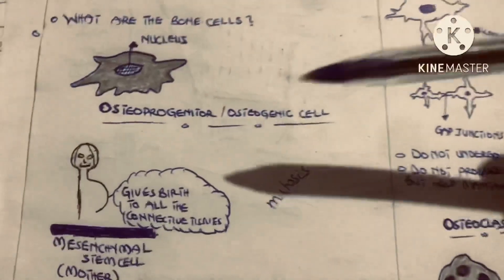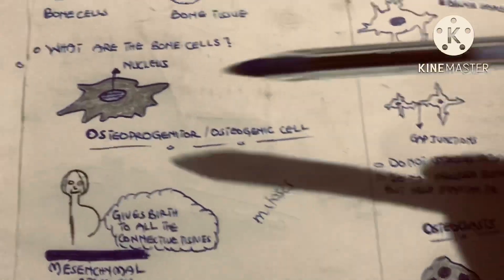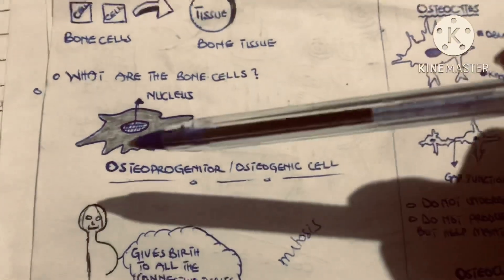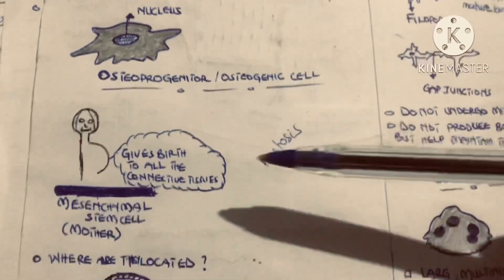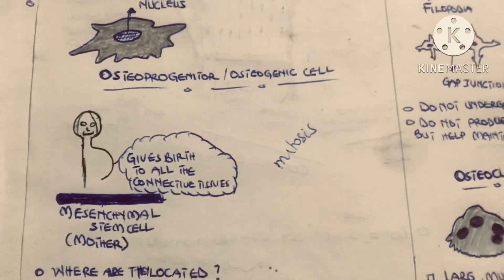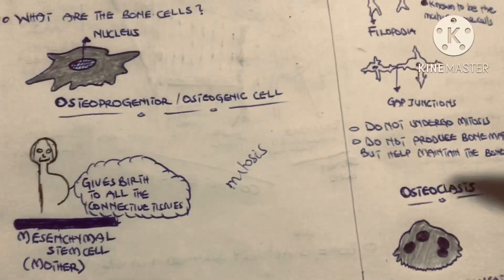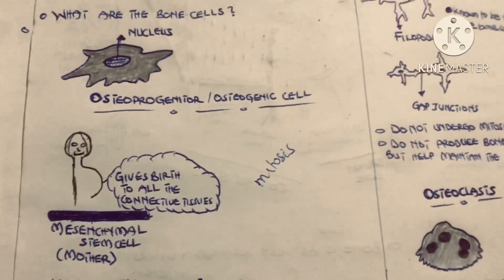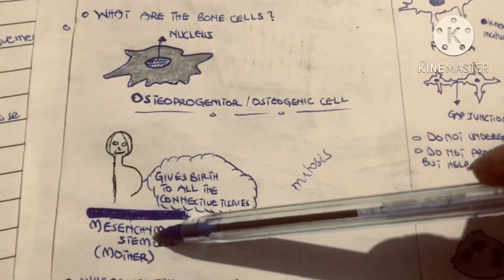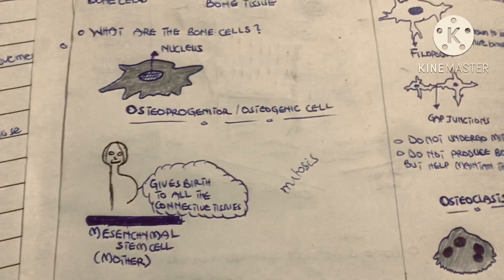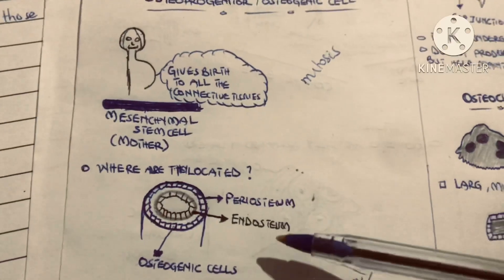The first one is the osteoprogenitor cell, which is also called the osteogenic cell. This is a representation of the osteogenic cell — it is mononucleated, containing only one nucleus. This osteogenic cell is derived from a stem cell called the mesenchymal stem cell. The mesenchymal stem cell serves as the mother that gives birth to all the connective tissues in our body, including cartilage and bone. We can find osteoprogenitor cells in the periosteum and the endosteum.